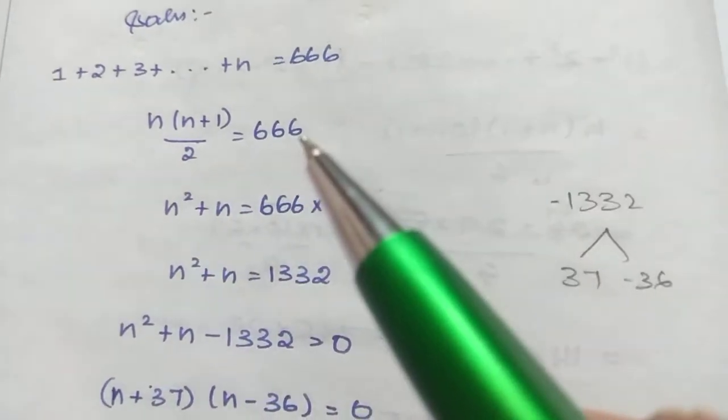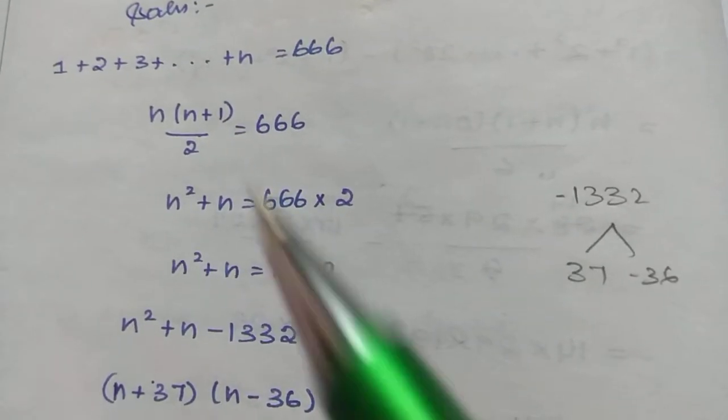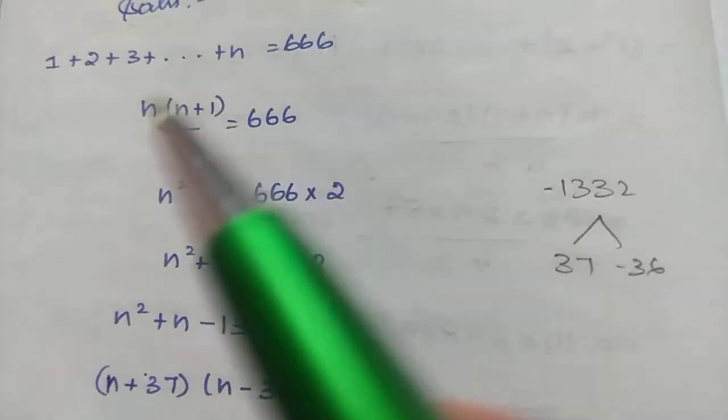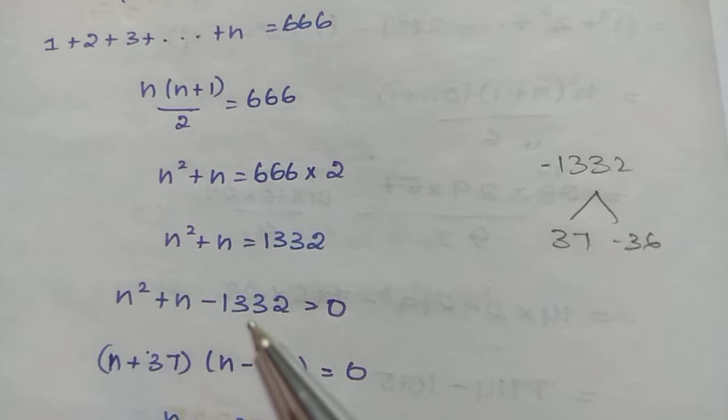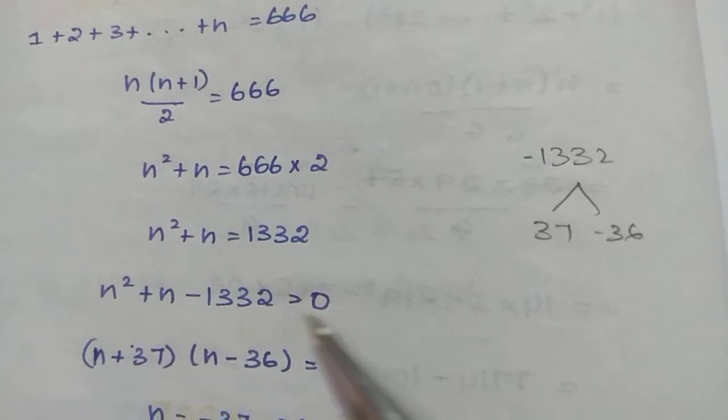Cross multiply: n² + n = 666 × 2, so n² + n = 1332. Therefore n² + n - 1332 = 0.